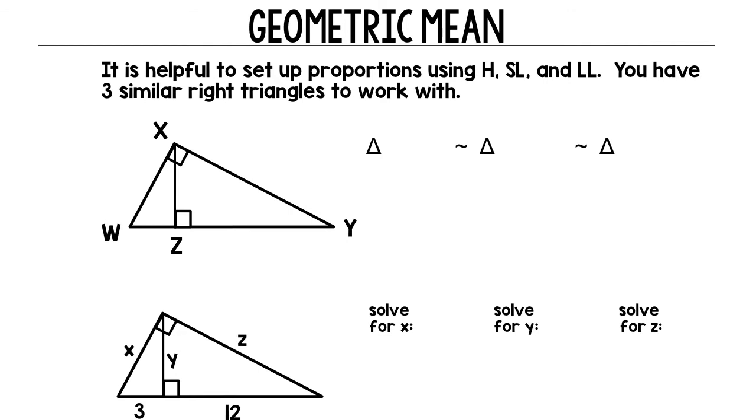So that's geometric mean. Flip your paper over. We're going to learn a little bit more about it. Geometric mean. It is helpful to set up proportions using H like height, which is an altitude, short leg and long leg. You have three similar triangles to work with. So we do. We already know two of those triangles.